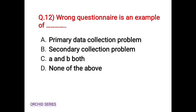Question number 12: a wrong questionnaire is an example of — Option A: primary data collection problem, Option C: A and B both, Option D: none of the above. The correct answer is Option A — a wrong questionnaire is an example of a primary data collection problem.